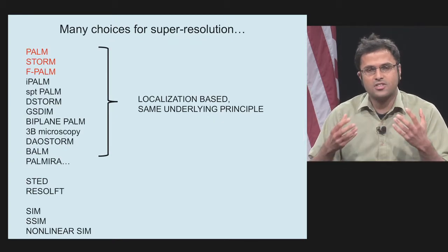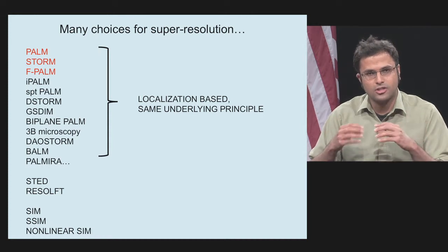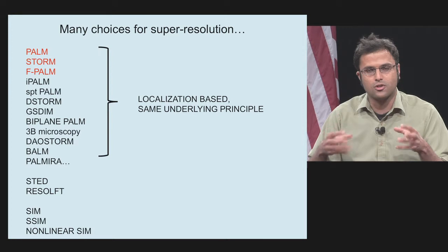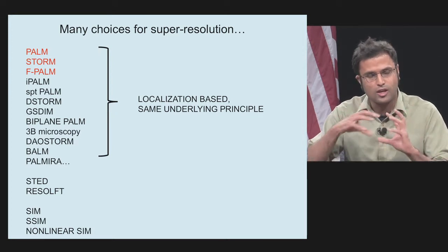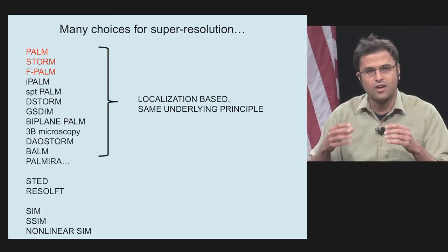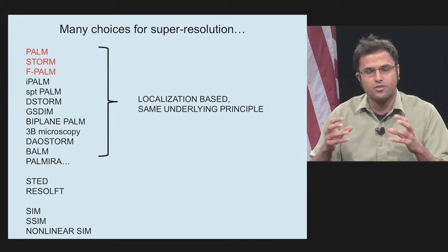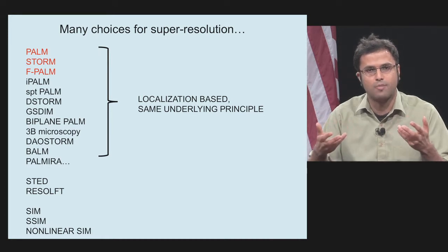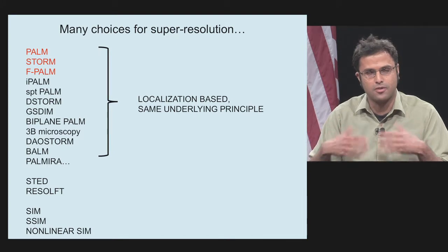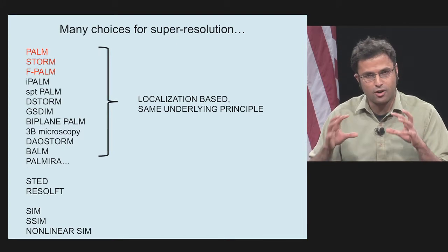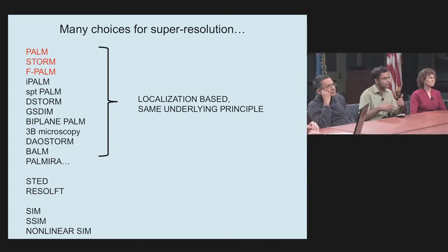The good news is that as a biologist today, you're confronted with a whole sea of different techniques that circumvent this limit using light. I only have time to focus on one class of these techniques based on localization of single molecules. The pioneering group of these techniques were PALM, STORM, and fPALM, but there are also other techniques like STED and structured illumination microscopy that are very powerful for circumventing the diffraction limit.